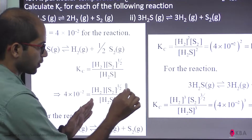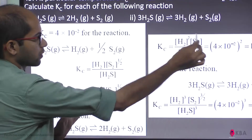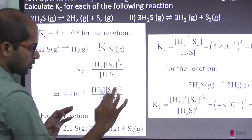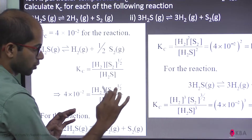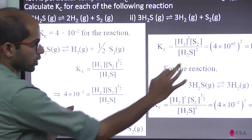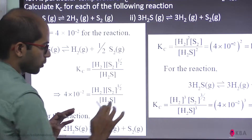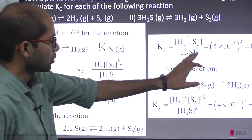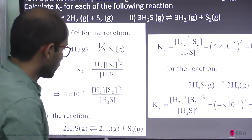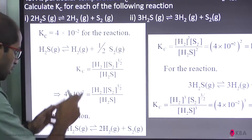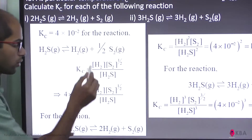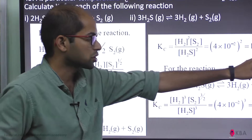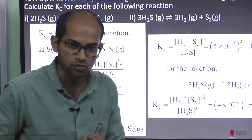If you do the whole square of the original Kc expression, [H₂]² × [S₂]^(1/2)² divided by [H₂S]², the coefficients work out. So the new Kc value is the square of the original: (4 into 10 to the power minus 2)² = 16 into 10 to the power minus 4.